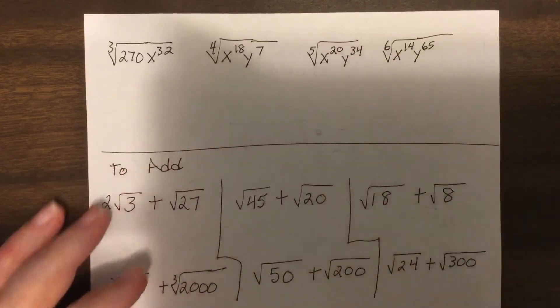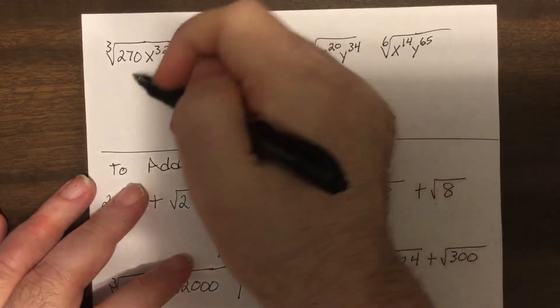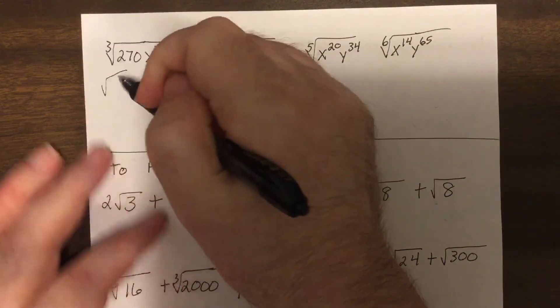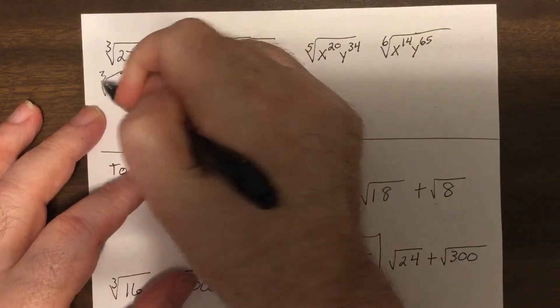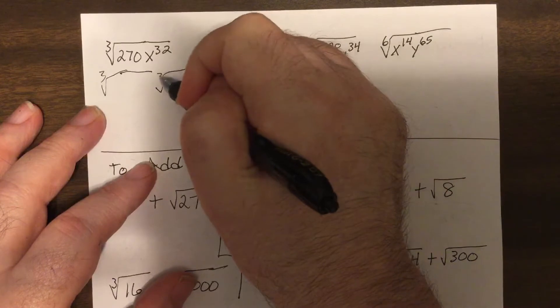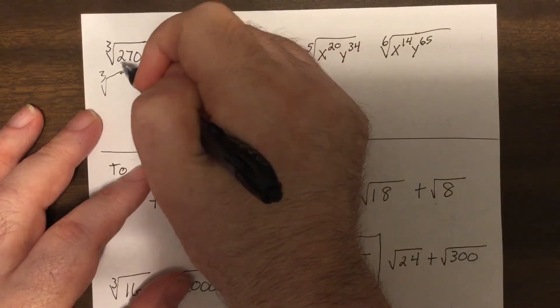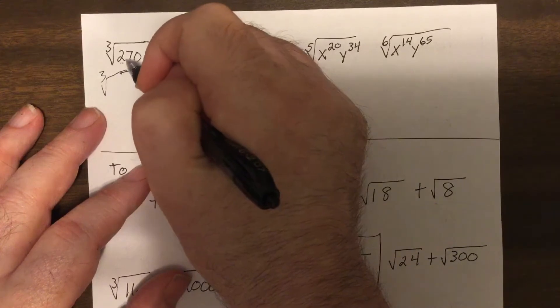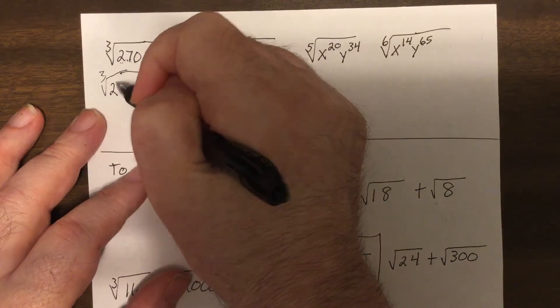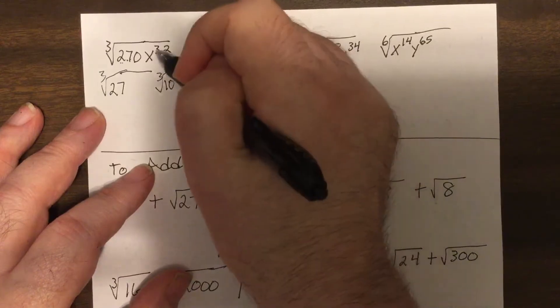Okay, so let's simplify some problems here. Now cube root, I need to break it up to two parts. So one part is my perfect cubes. My other part is what's left over. What perfect cube goes into 27? Well, I hope you know three cubed is 27. So 10 would be left over.